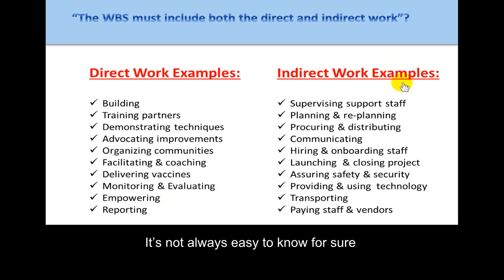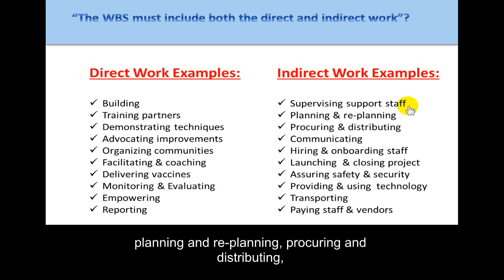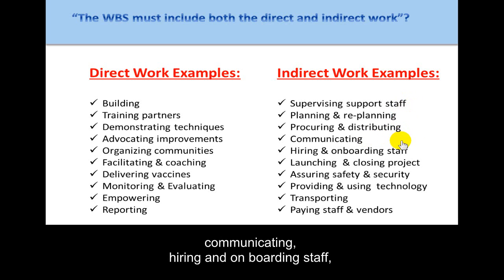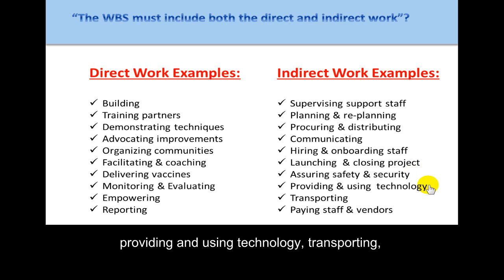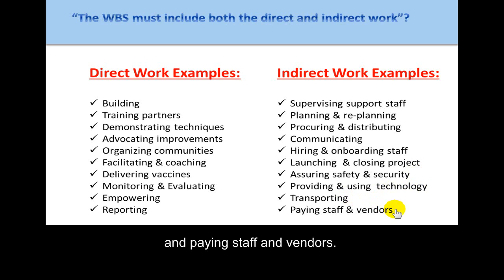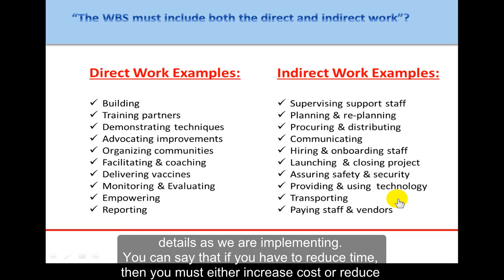Indirect work examples are a little more difficult, and it's not always easy to know which category the work should go in. It includes things like supervising support staff, planning and replanning, procuring and distributing, communicating, hiring and onboarding staff, launching and closing the project, assuring safety and security, providing and using technology, and transporting and paying staff and vendors. We often forget to put these categories in our comprehensive list of work to be done.